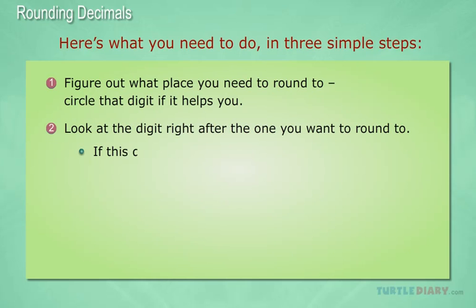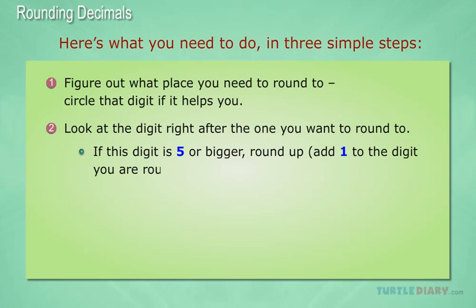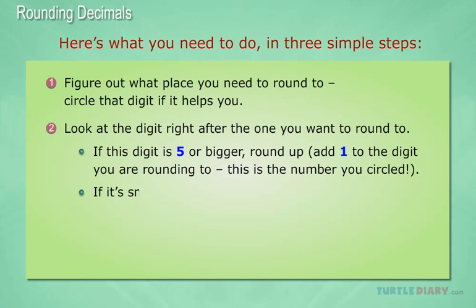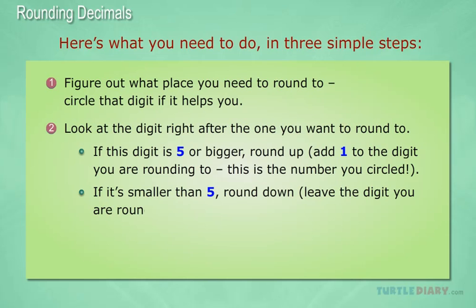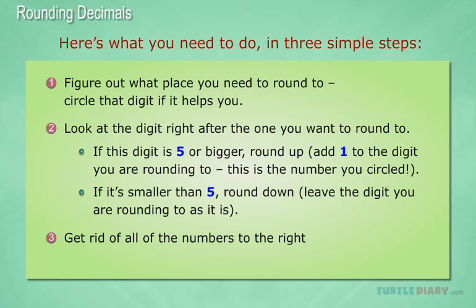If this digit is 5 or bigger, round up — add 1 to the digit you are rounding to; this is the number you circled. If it's smaller than 5, round down — leave the digit you are rounding to as it is. Then get rid of all the numbers to the right of the digit you are rounding to.